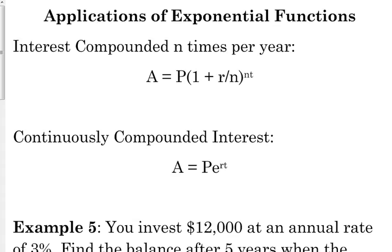So we've got two scenarios here. We have interest that is compounded N times per year. Here's the formula for it. You do need to be familiar with this. So the A here represents the amount after a certain period of time.